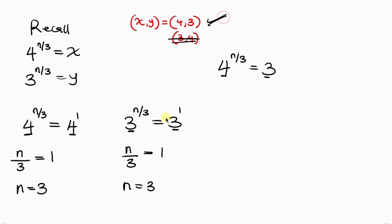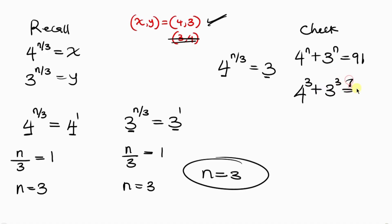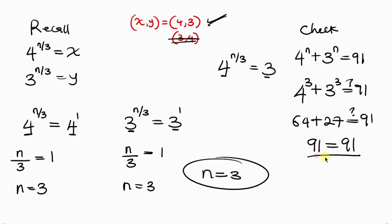Let's verify: the original equation is 4^n + 3^n = 91. Substituting n = 3: 4³ + 3³ = 64 + 27 = 91. This equals the right-hand side, confirming that n = 3 is correct.